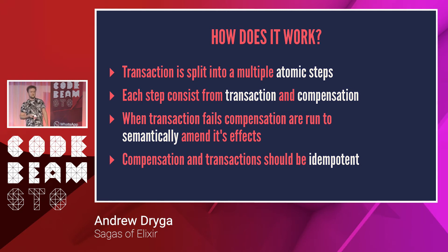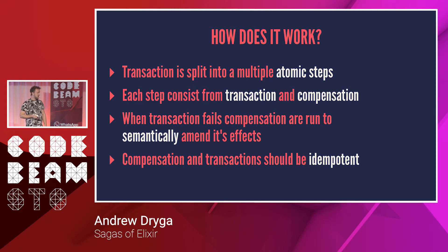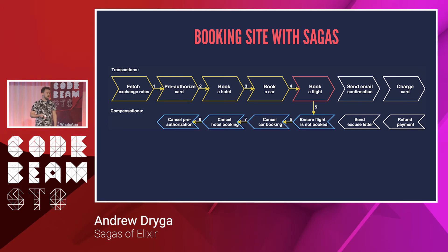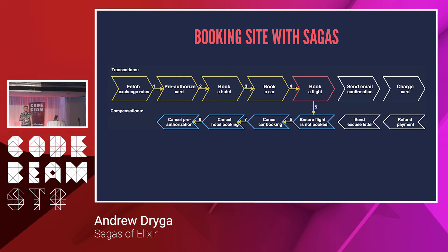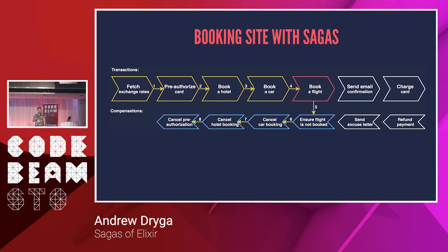There's a requirement that transactions and compensations should be idempotent, because you should be able to retry them without creating further side effects. In practice, my compensations are not always idempotent — it still works, but it's something you should consider. Getting back to our booking site example: with Saga, we define a two-way flow. For each stage we have a compensation function that knows how to clean up effects created at that stage. The Saga's goal is to catch failures, run compensations, and clean up all side effects created before the failure. It's like having a step-by-step map to reach a destination, and a plan B — a safe route home.